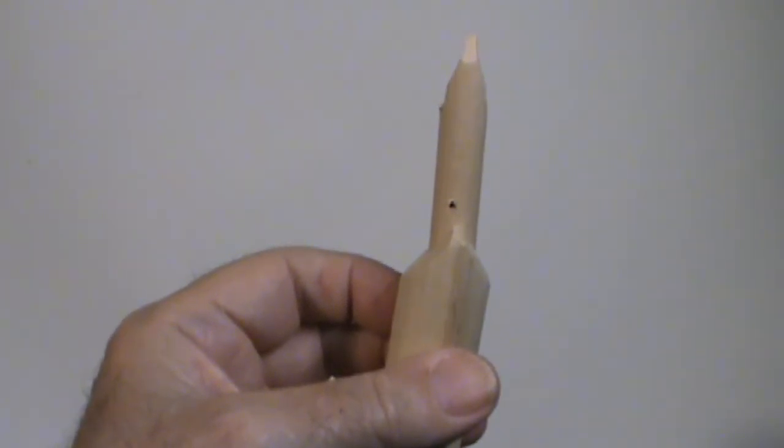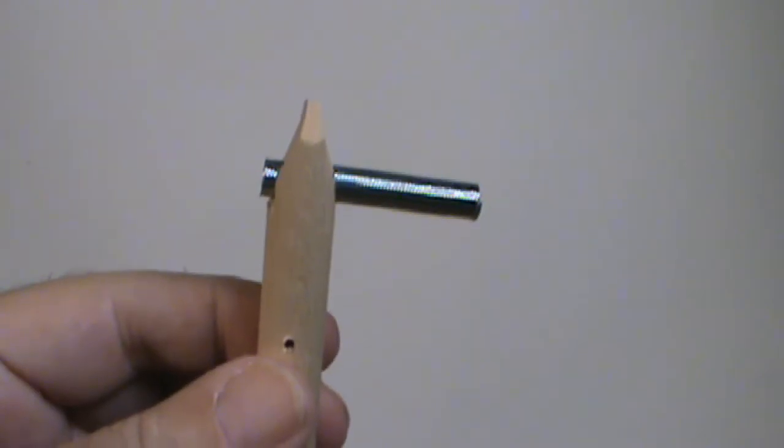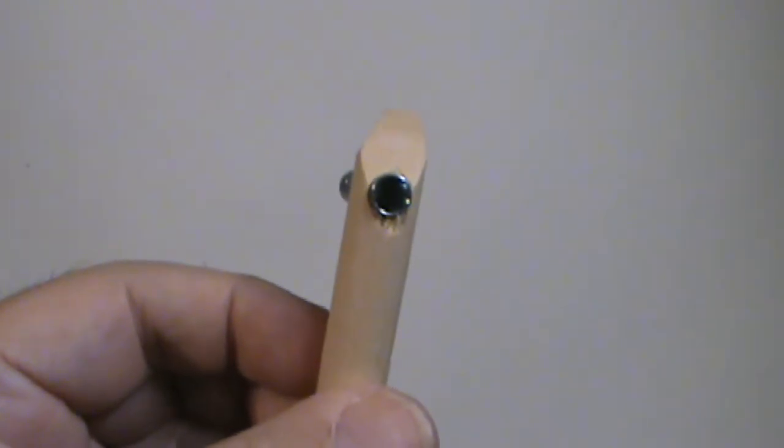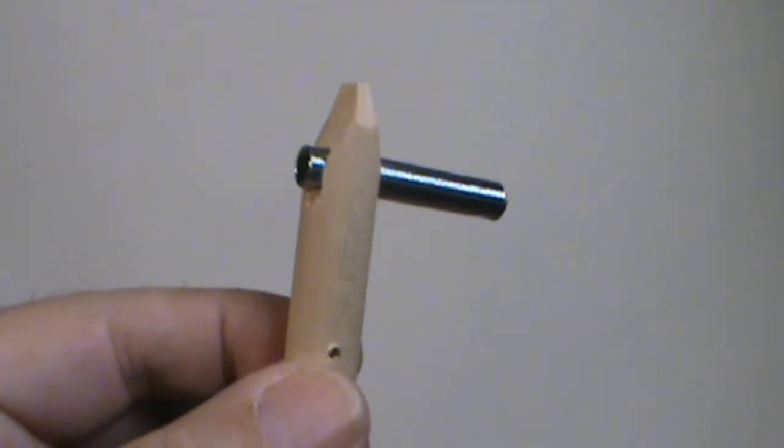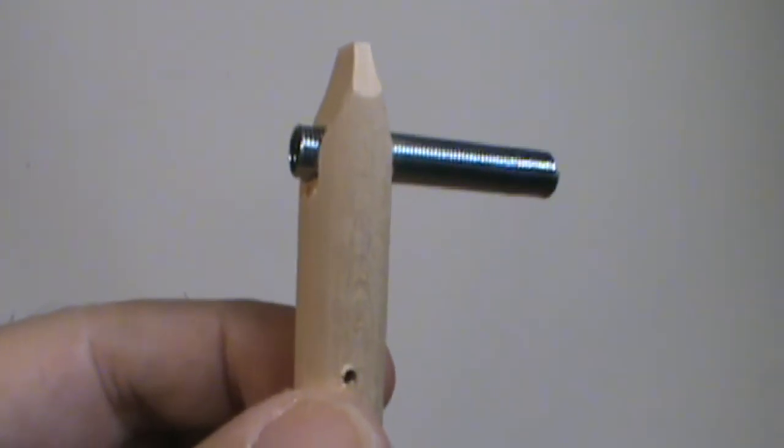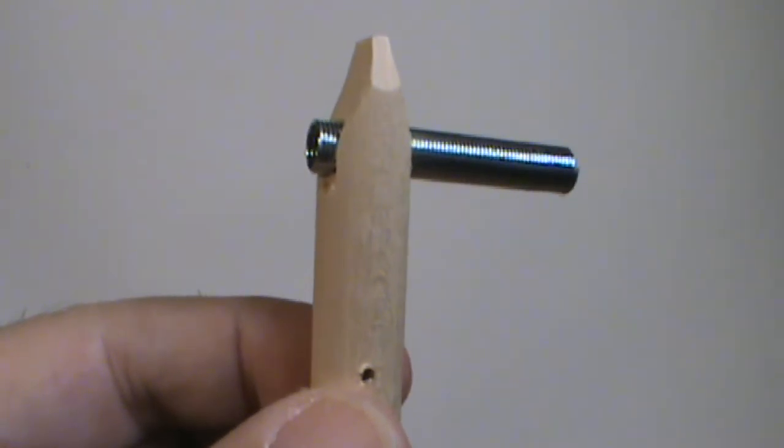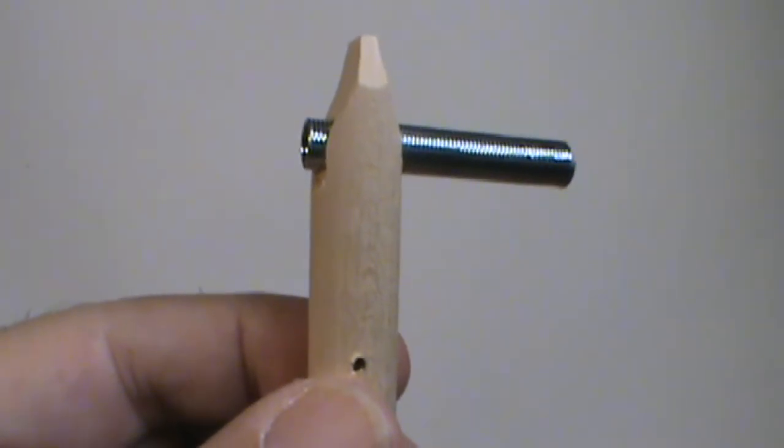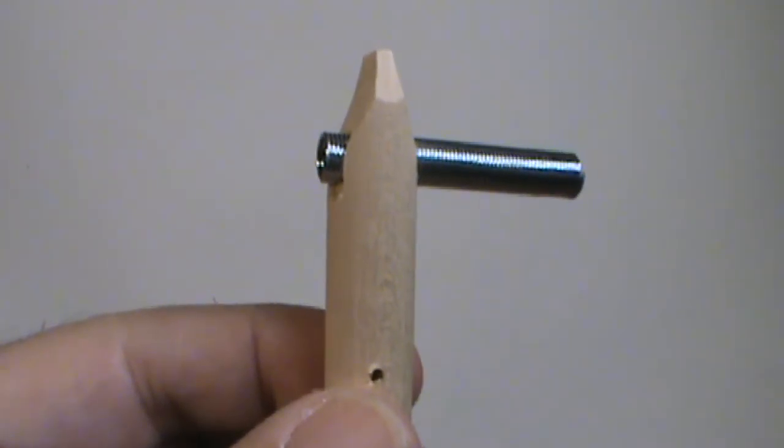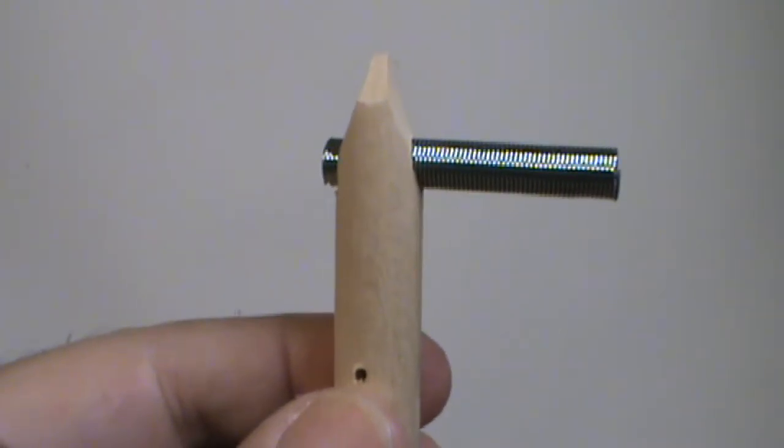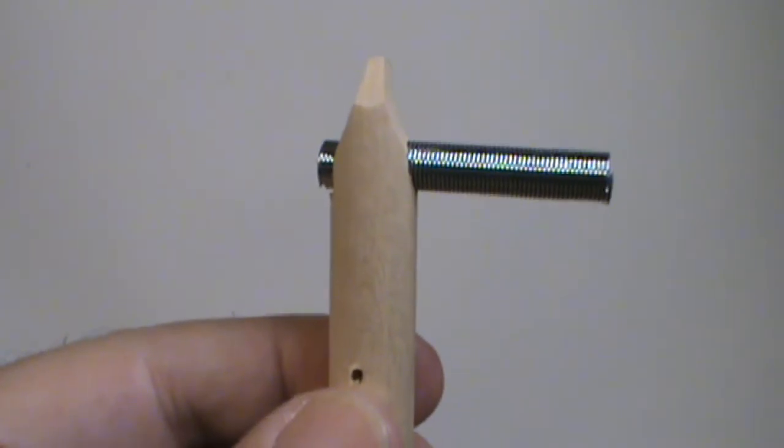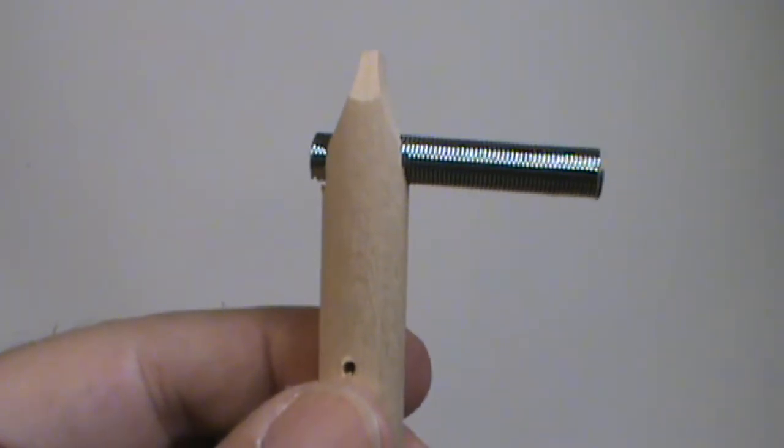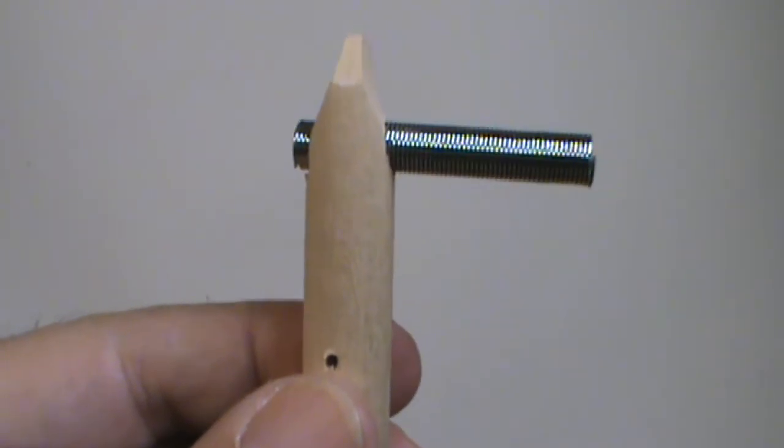Press the spring through the dowel and position it so there are about four rings protruding through on the side, the short side. You'll cut the other side with wire cutters so that there's four loops there as well.